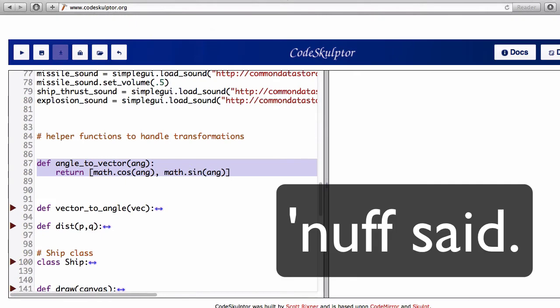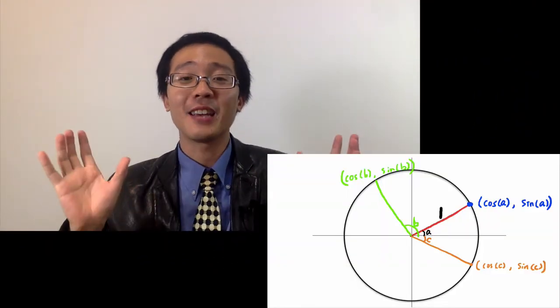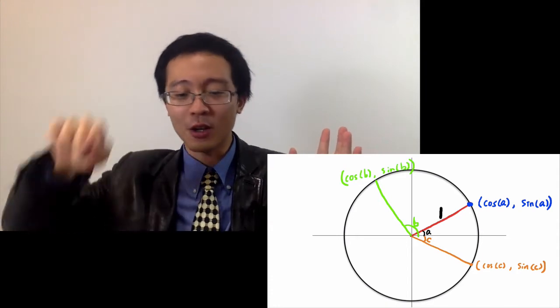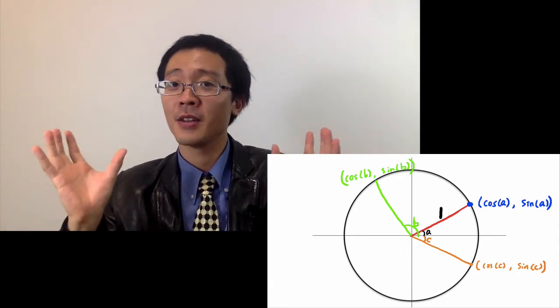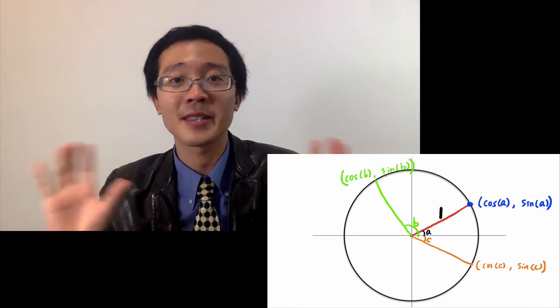Enough said. But there is one more thing. Just food for thought. Number one, if you have two angles, and they differ by a whole rotation, then their cosine and sine will be all same.